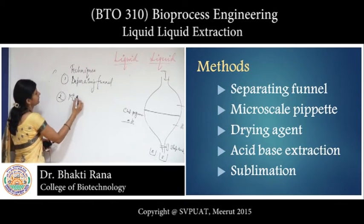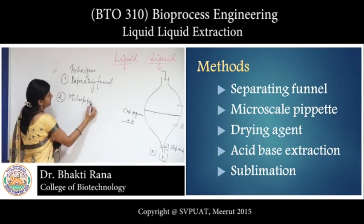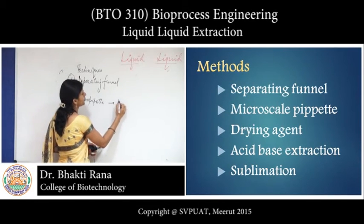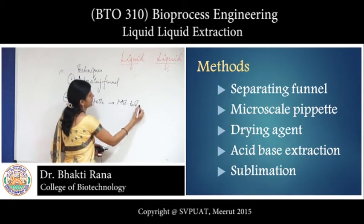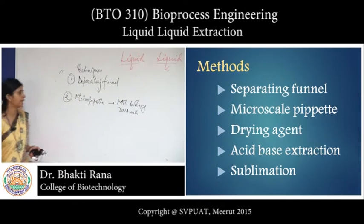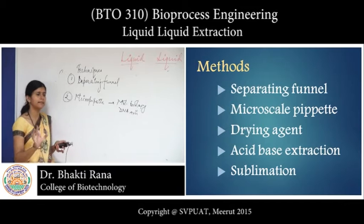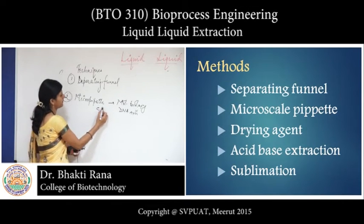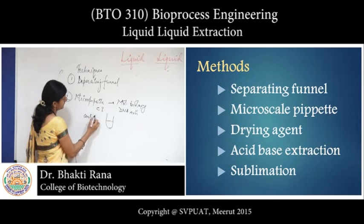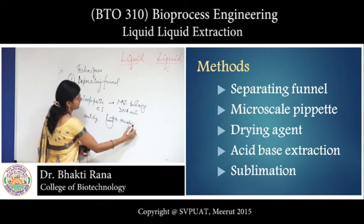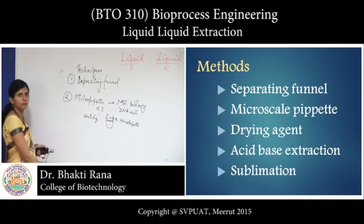The second technique is using a micropipette. We use a micropipette during DNA extraction or molecular biology experiments. When you extract DNA, after taking the supernatant and adding CTAB buffer, there comes a point when you have to add CI and centrifuge it. You then see two different layers A and B, and you take out the desired layer using a micropipette. So you can separate the two liquids using a micropipette in the lab.